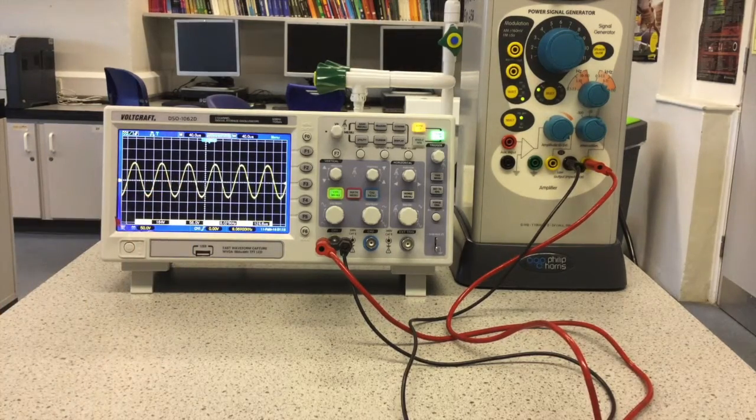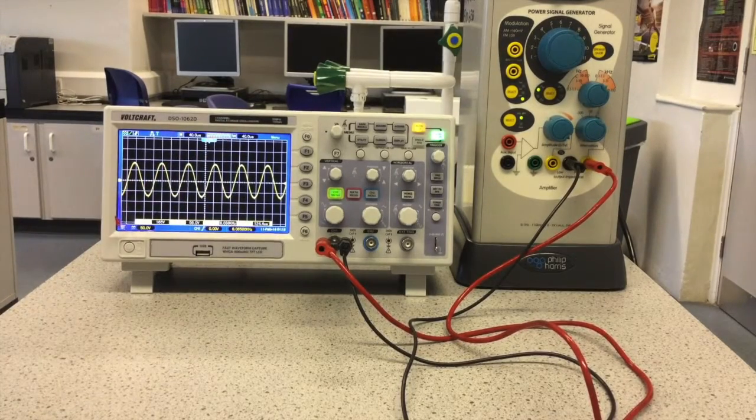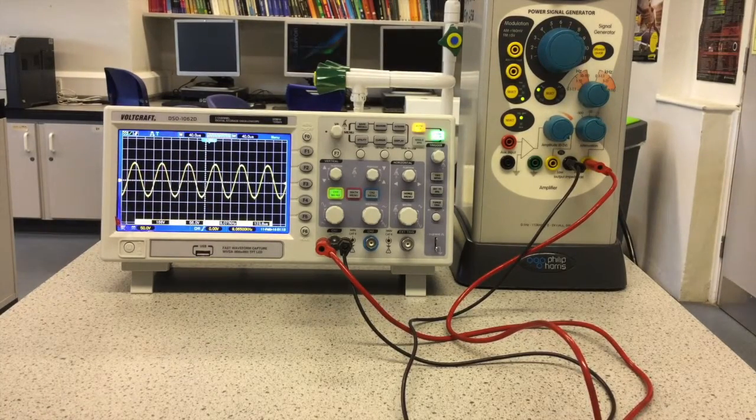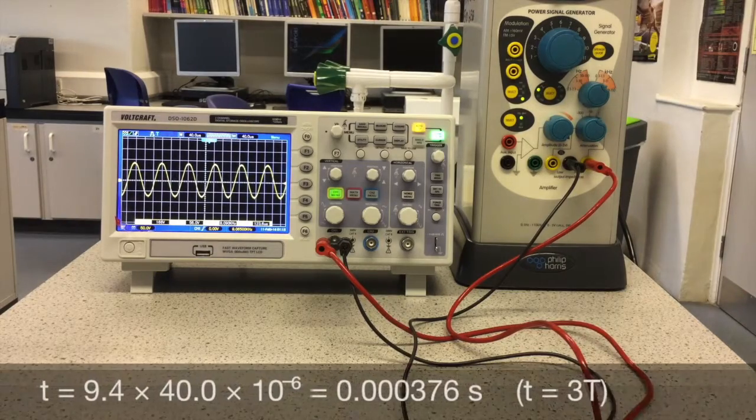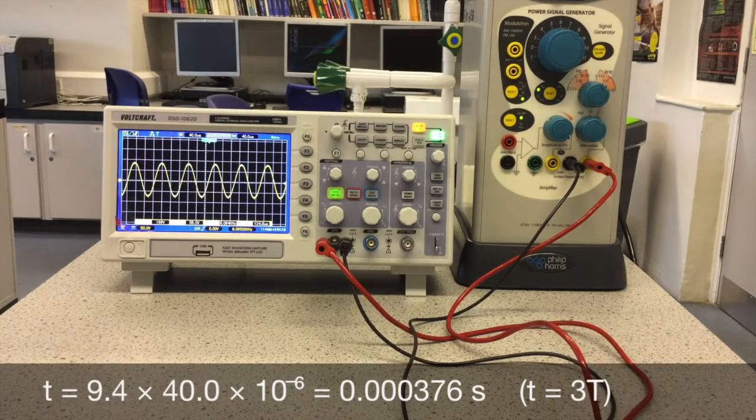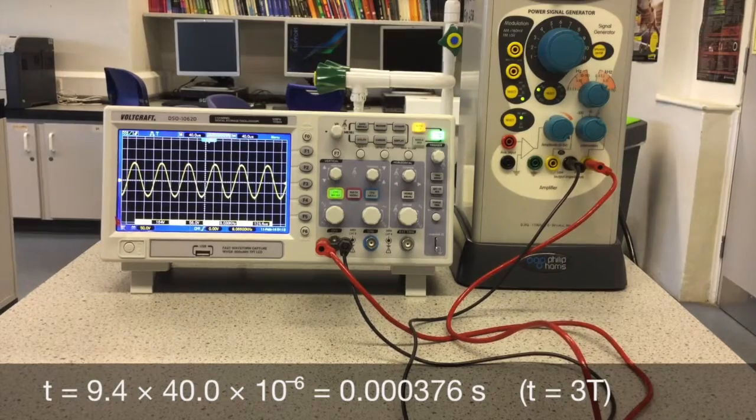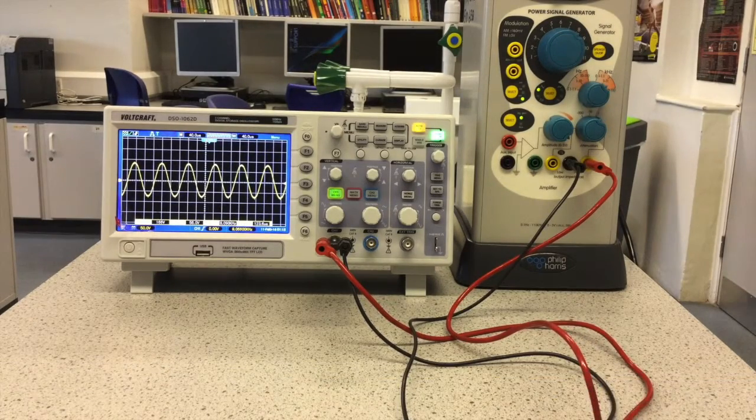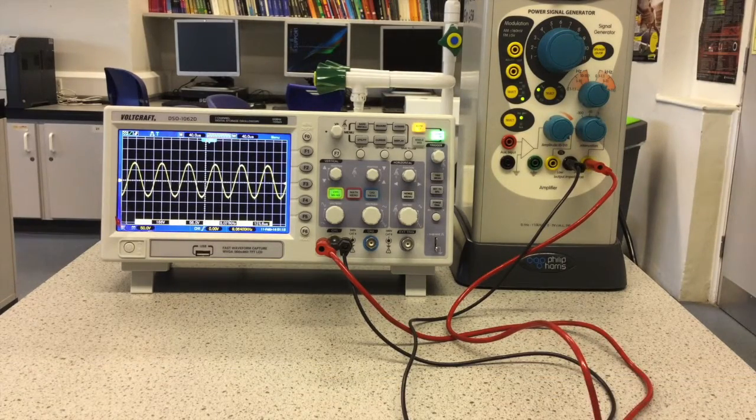And I multiply that by the time-based setting, so 9.4 multiplied by 40 times 10 to the minus 6. That gives me 0.00376.